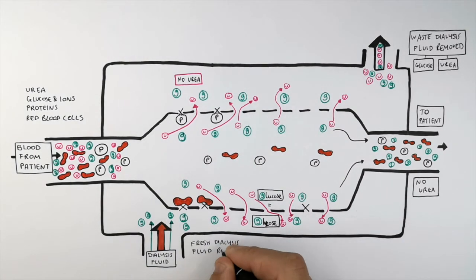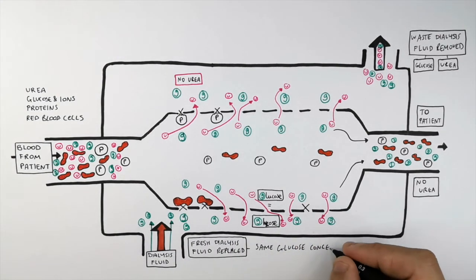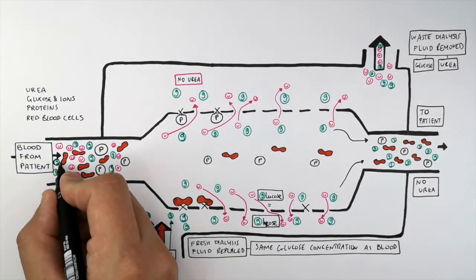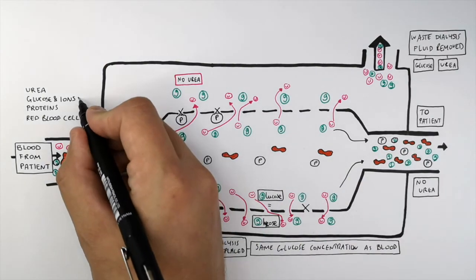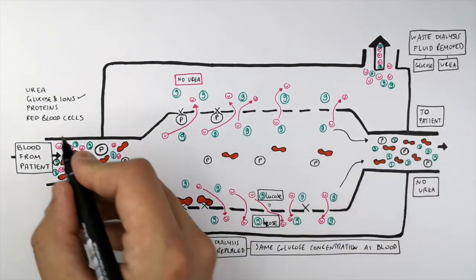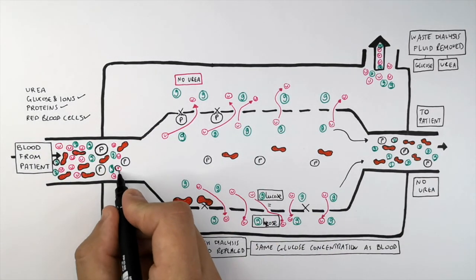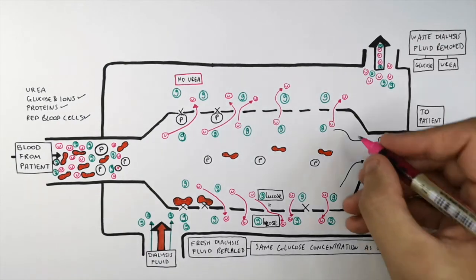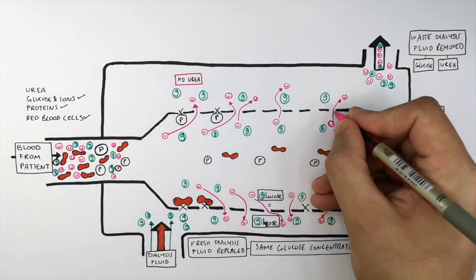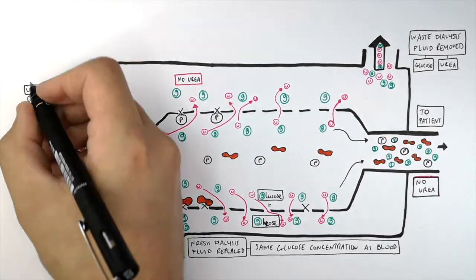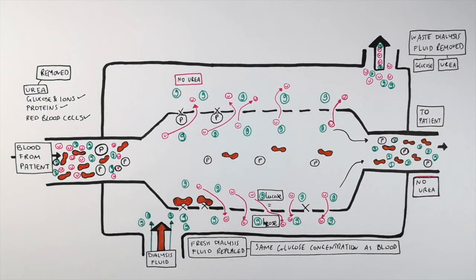Fresh dialysis fluid is replaced and it has the same glucose concentration as the patient's blood. The components found in the blood both before and after passing through the dialysis machine are glucose and ions, proteins, and red blood cells. However, there is no urea in the blood that returns to the patient, because the urea diffuses from high to low concentration — from the blood into the dialysis fluid. That is how urea is removed from the blood during dialysis.